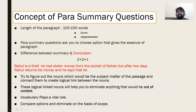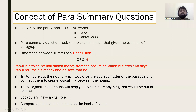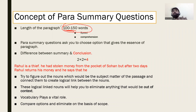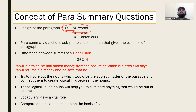The concept of Para Summary is very easy — try to understand it first. The first point I have described is that Para Summary length is 100 to 150 words. These three questions will be 100 to 150 words, though it may vary from question to question. So what would work over there? The first point you have to consider is that speed must be there.